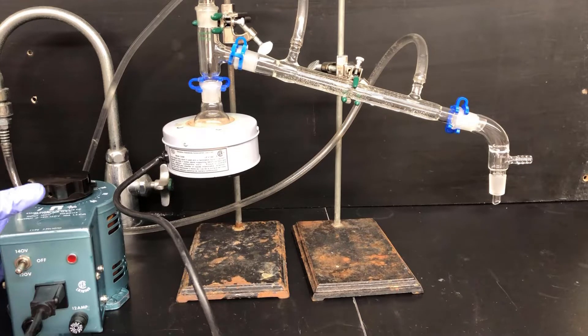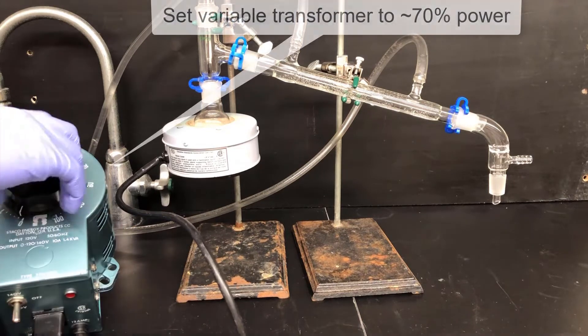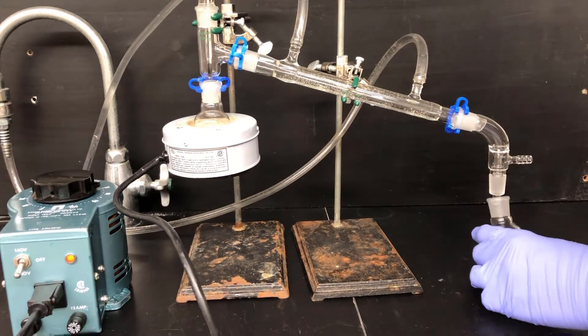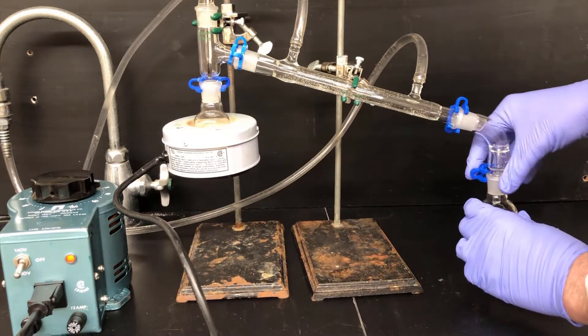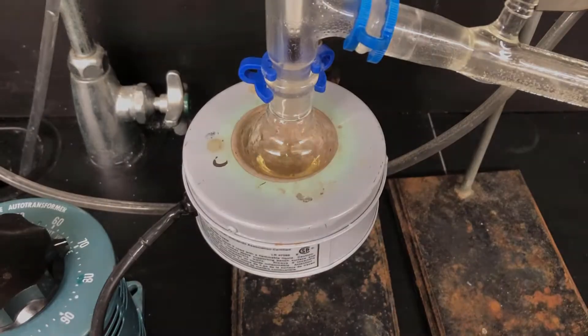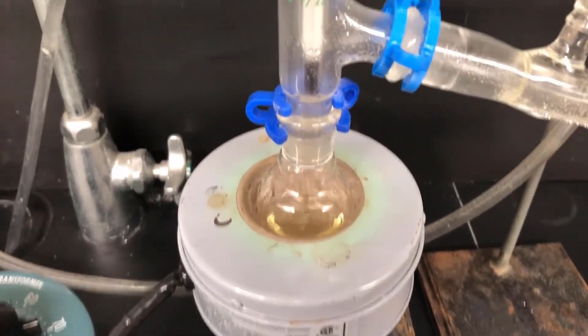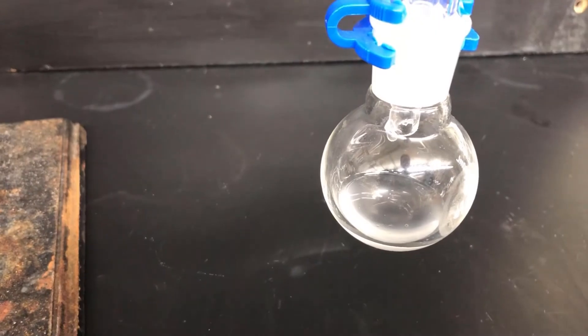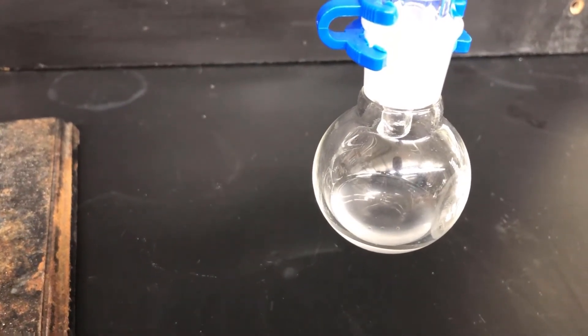Make sure the heating mantle is plugged into the variable transformer and not the wall current. Next, set the transformer to about 70% power and turn it on. Attach a collection vessel to your distillation apparatus. Watch the apparatus and wait for the distillation to progress. As the distillation progresses, it'll look like this. The distillate should boil just below 100 degrees Celsius, and it may appear cloudy because the water and alkene products are insoluble.